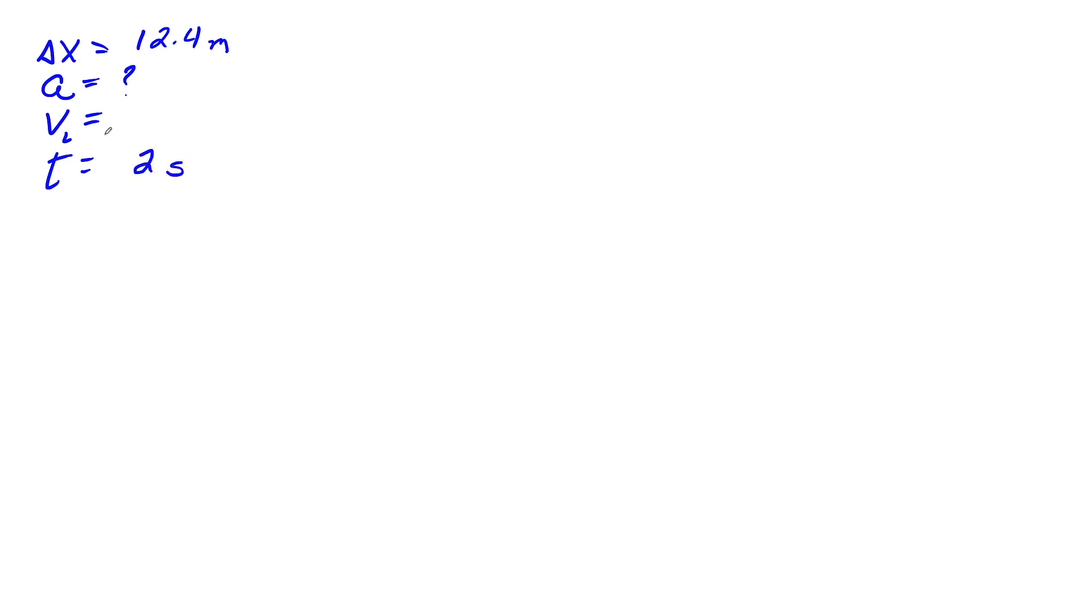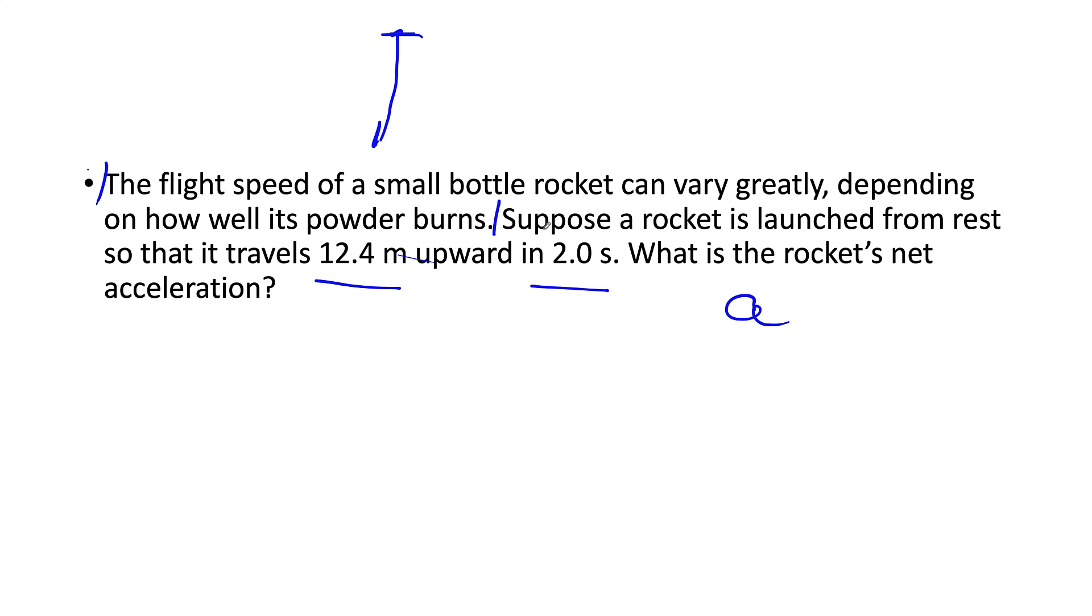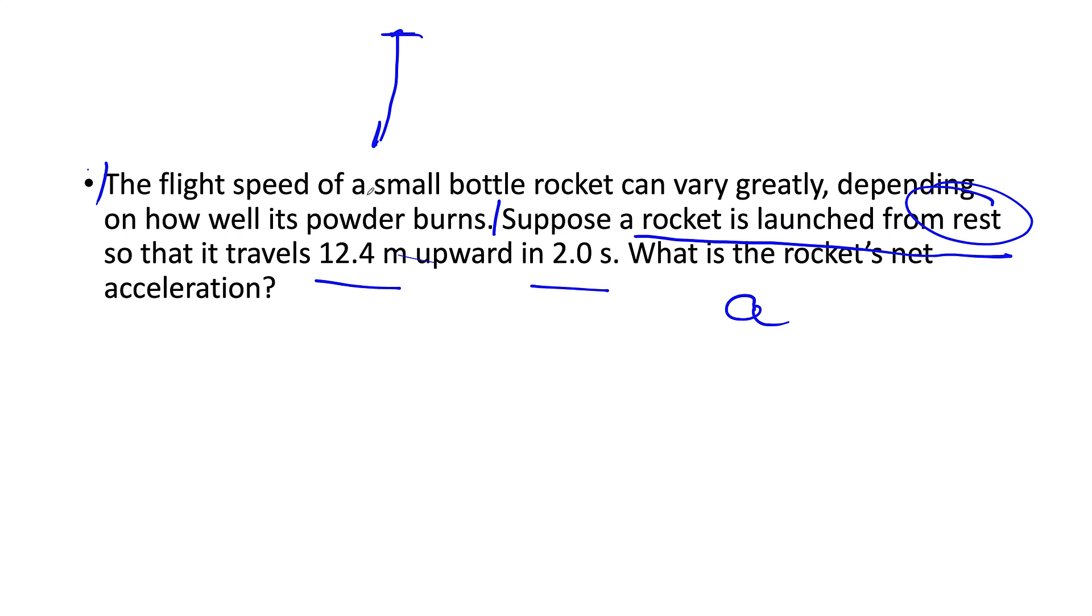That's our initial velocity. Well it hasn't really said, except for right here. Suppose our rocket is launched from rest. That is telling me that my initial velocity is zero.